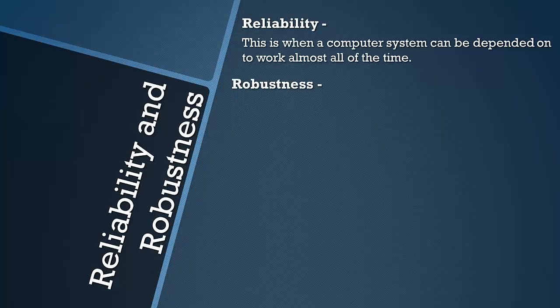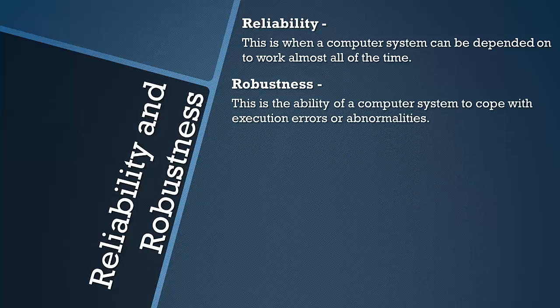Robustness is a computer system's ability to cope with execution errors or abnormalities. For example, if your program requires you to input something and you input something unexpected — like a number instead of a letter — if it's robust it will be able to deal with it and not crash. If it's not robust, it may crash or freeze, but on the general scheme of things, systems are very robust.